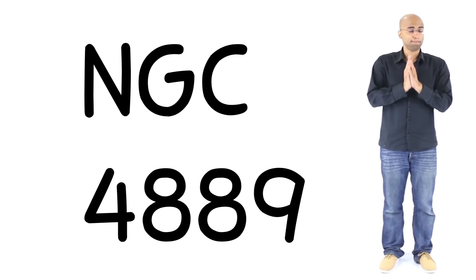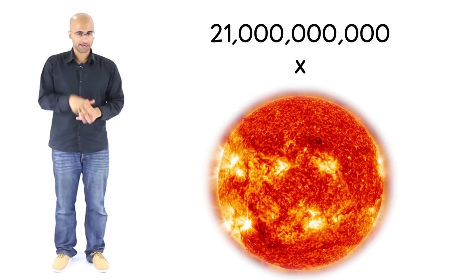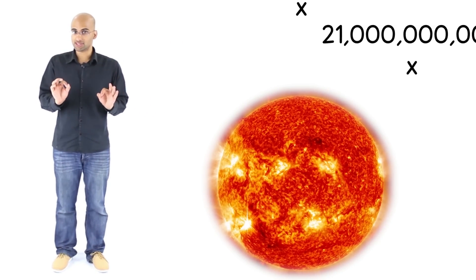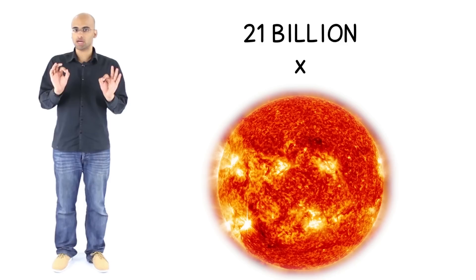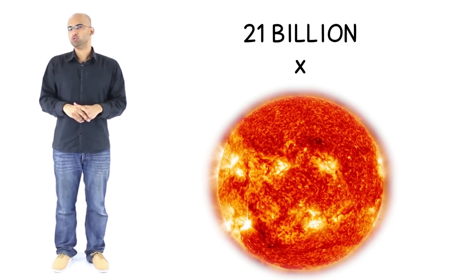The most massive supermassive black hole ever discovered was found in a galaxy called Holm 15A. It has 21 billion times the mass of our own sun. Let me repeat this again. It has 21 billion times the mass of our own sun.